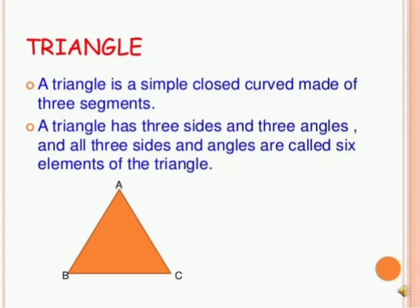Chapter six: Triangle and its properties. A triangle is a simple closed curve made of three segments. A triangle has three sides and three angles, and all three sides and angles are called six elements of the triangle.